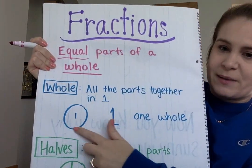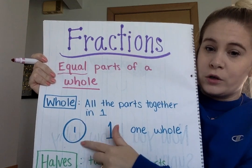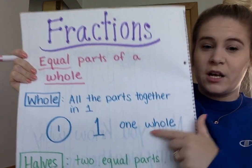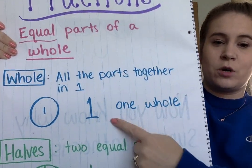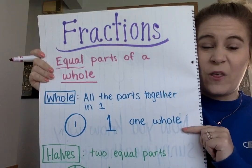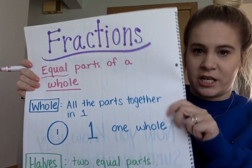So here is my circle. It's one whole circle. And we might see that as the number one, or we might see the words "one whole" — the whole thing. I have the whole cookie.